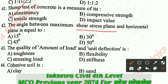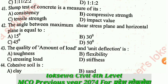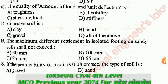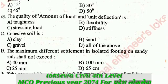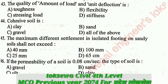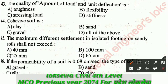Question number 43: The ratio of amount of load to unit deflection is: A - toughness, B - flexibility, C - stressing bond, D - stiffness. The correct answer is D: stiffness. The ratio of load to unit deflection is stiffness.